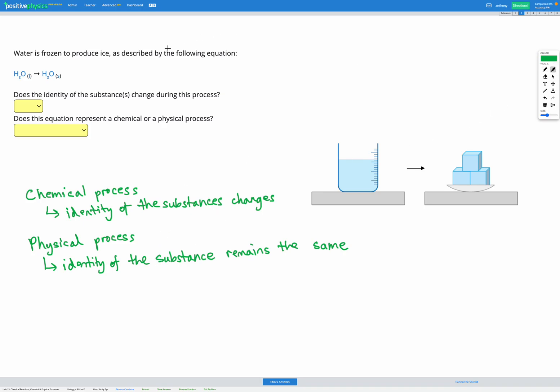In this question we're told we have water that's frozen to produce ice. In the equation we can see we've got H2O to start with with an L showing it's a liquid ending up as H2O with an S showing that's a solid. So something is changing in this process. The state of the water is changing. It starts as a liquid and it ends as a solid.